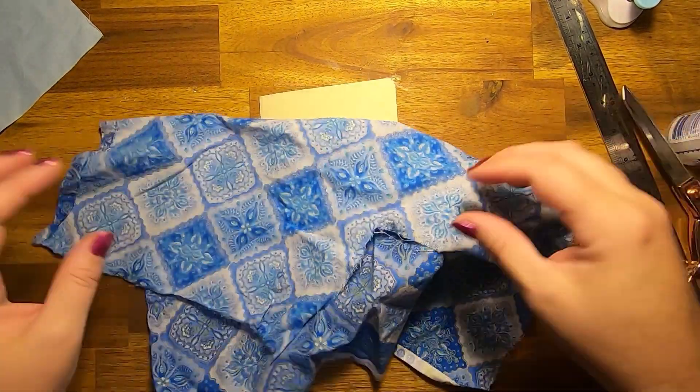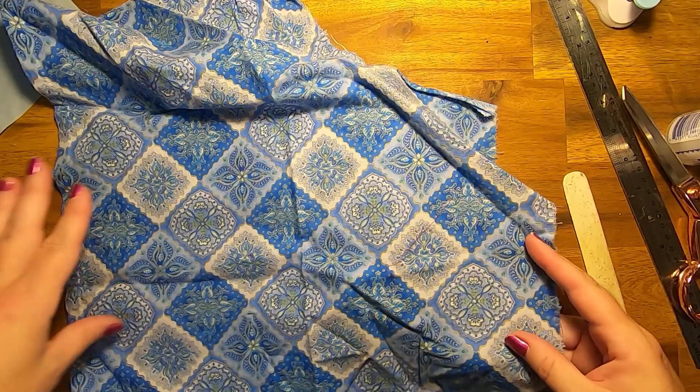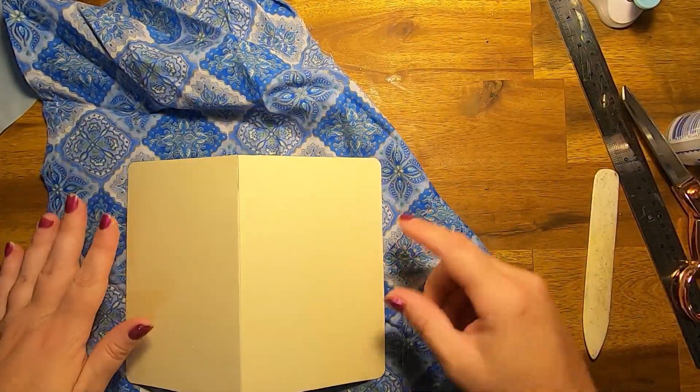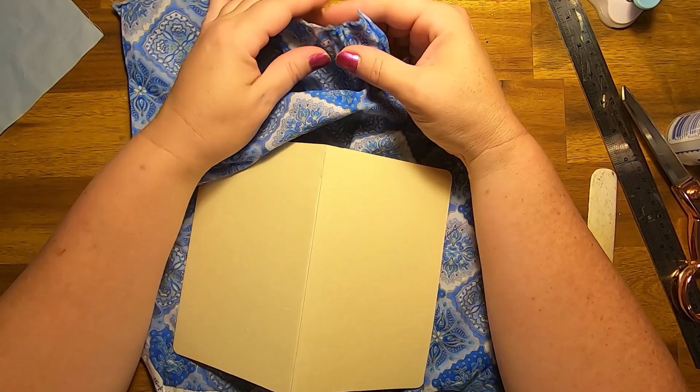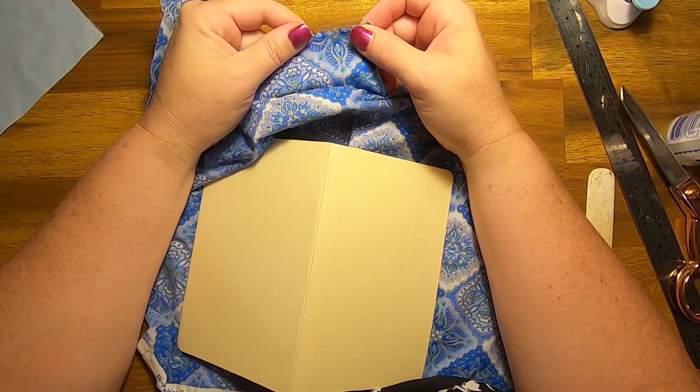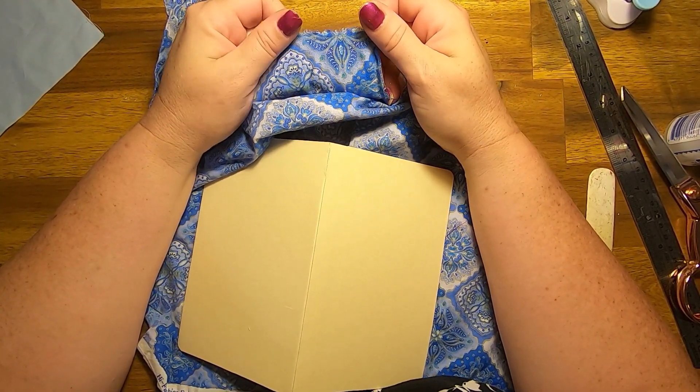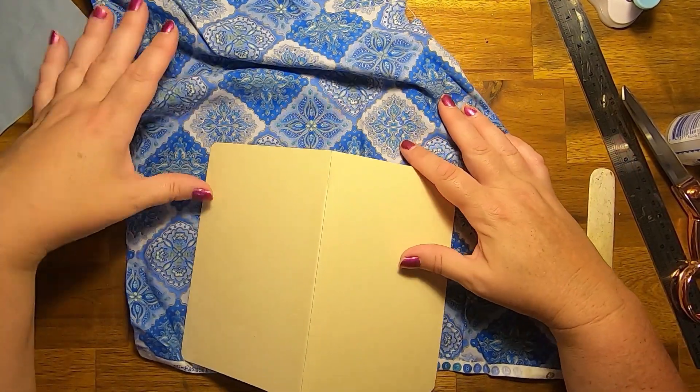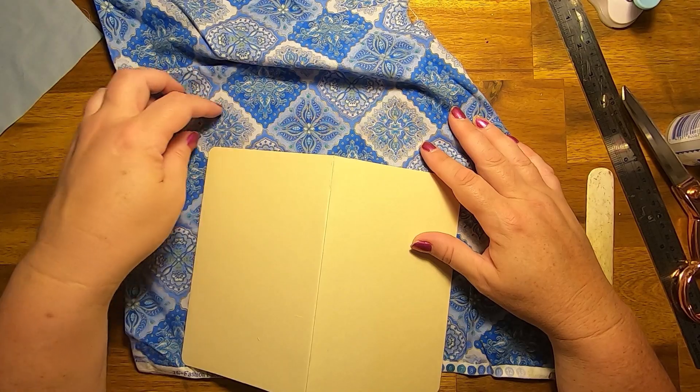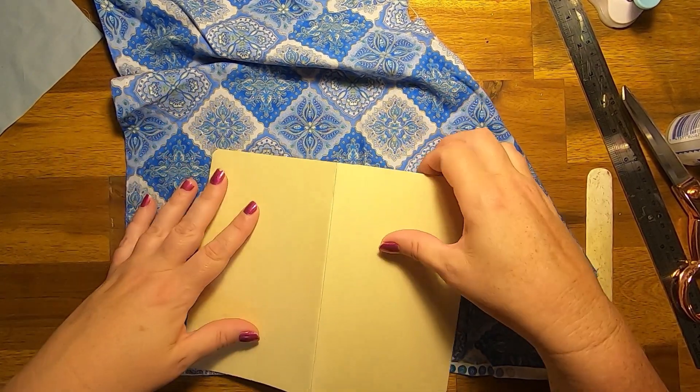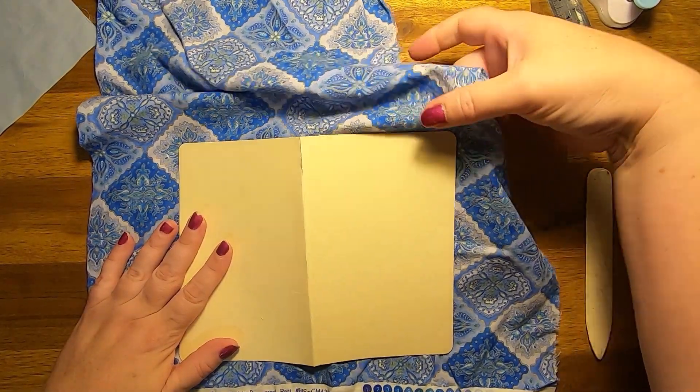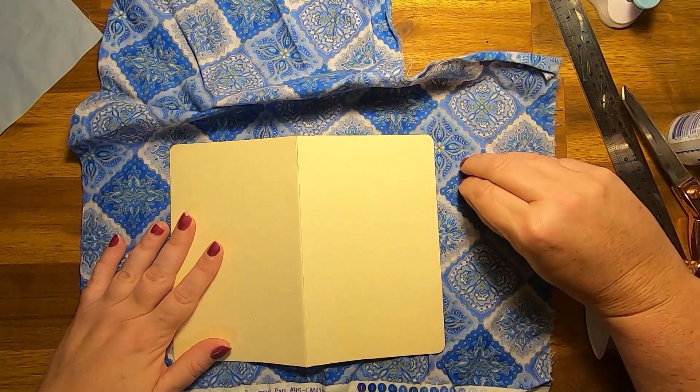So to do the cover I've chosen this blue fabric. Now the fabric that you want, you want it to be like a woven fabric that will fray so that you can fray your edges. You don't really want anything with like a design stitched into it because it won't fray very nicely. And you don't want knit because that won't fray.